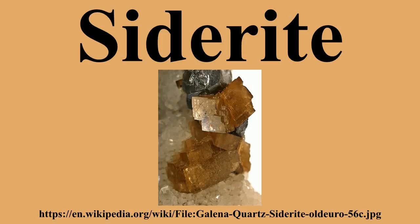It crystallizes in the trigonal crystal system and is rhombohedral in shape, typically with curved and striated faces. It also occurs in masses. Color ranges from yellow to dark brown or black, the latter being due to the presence of manganese.